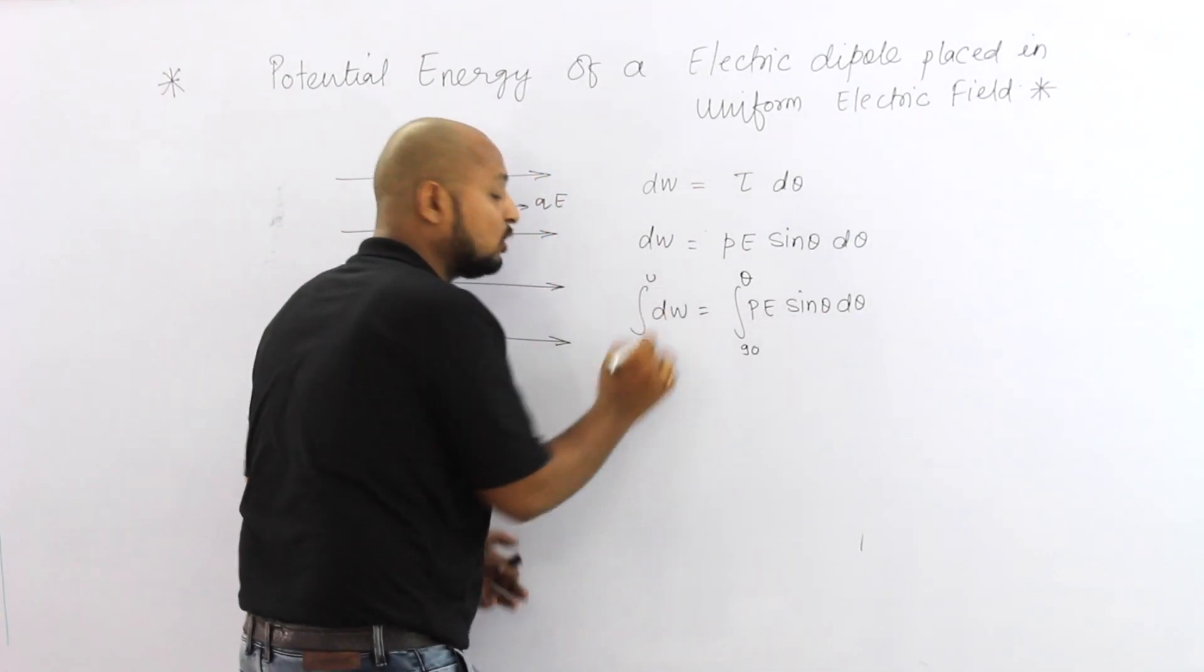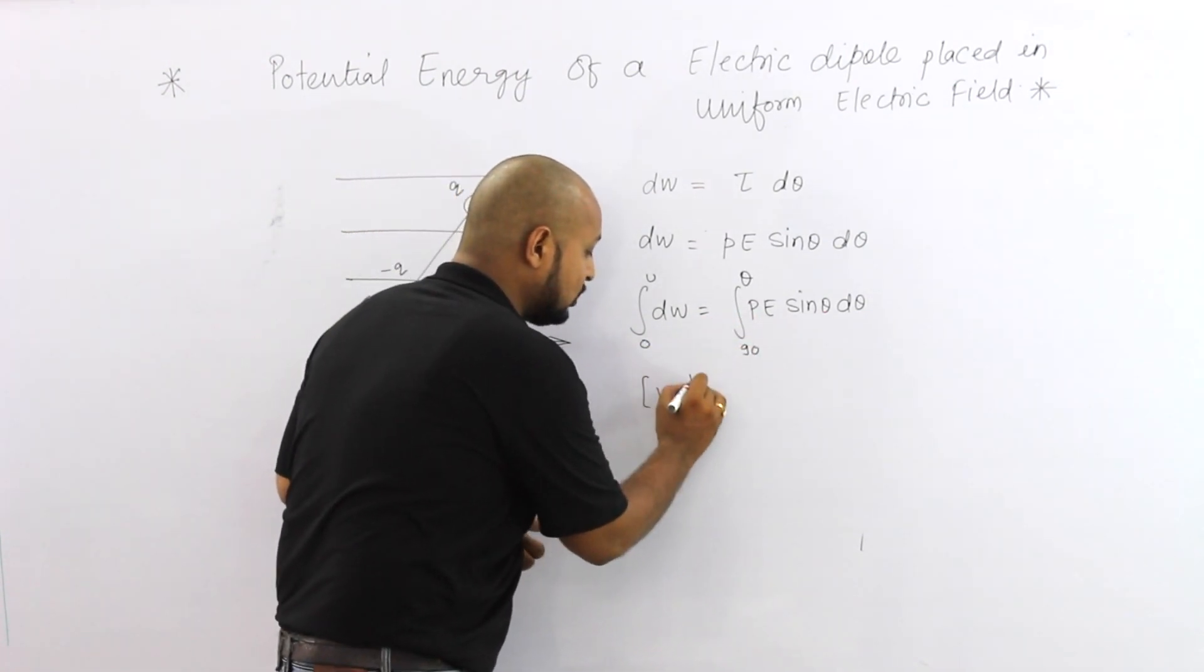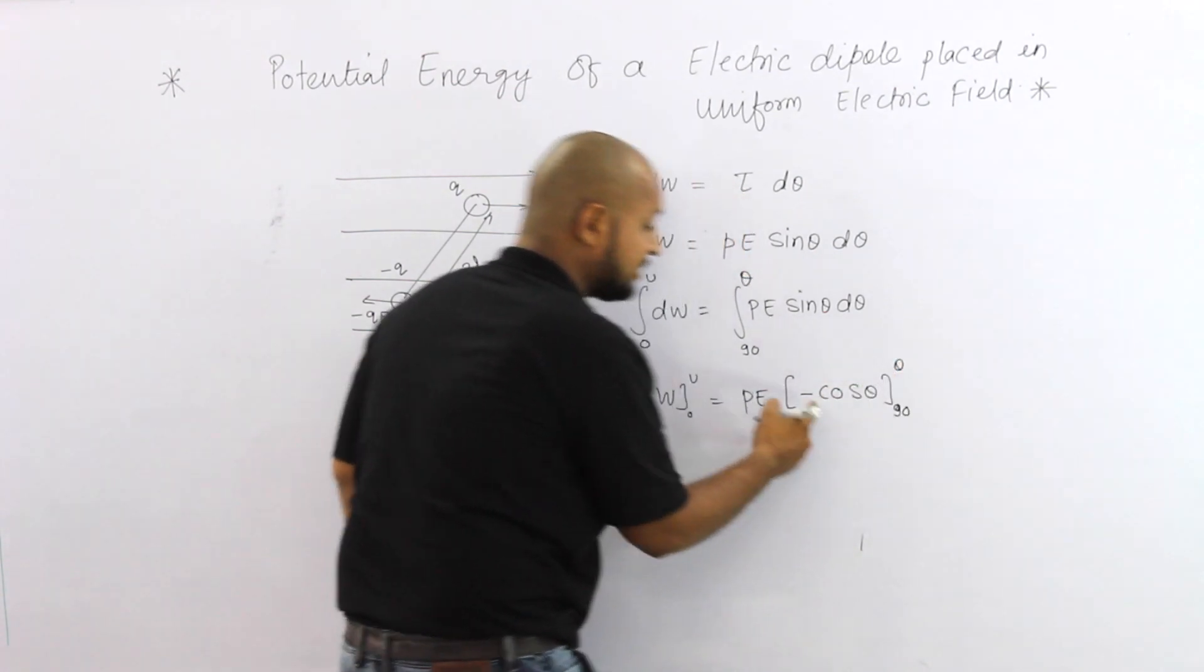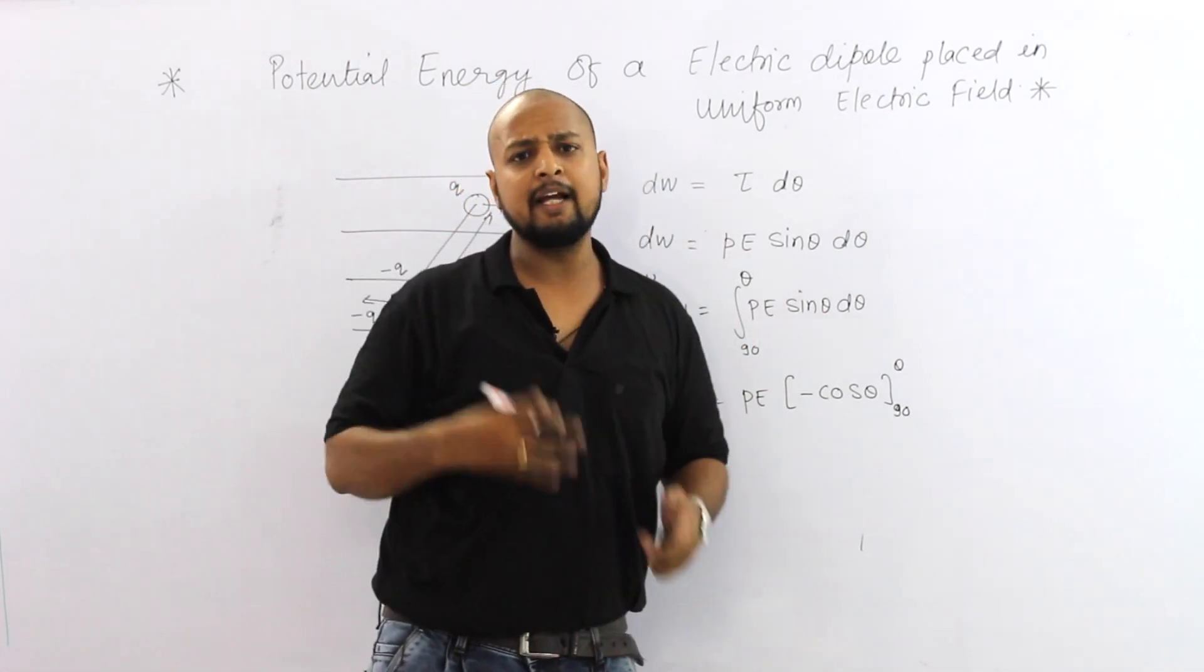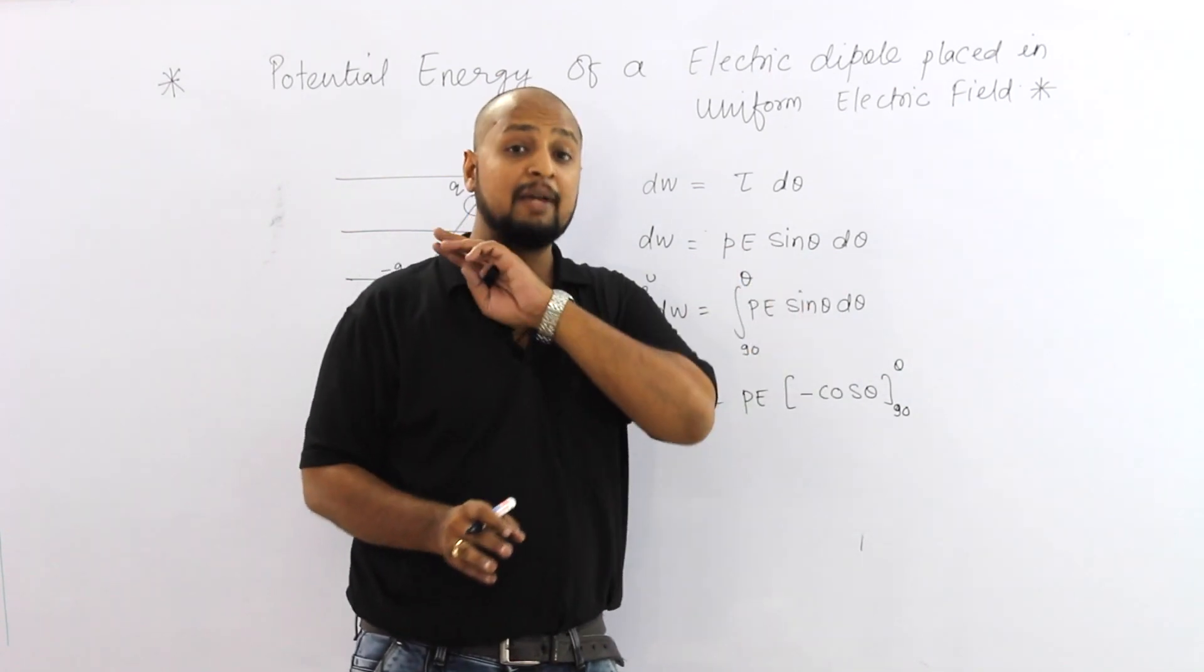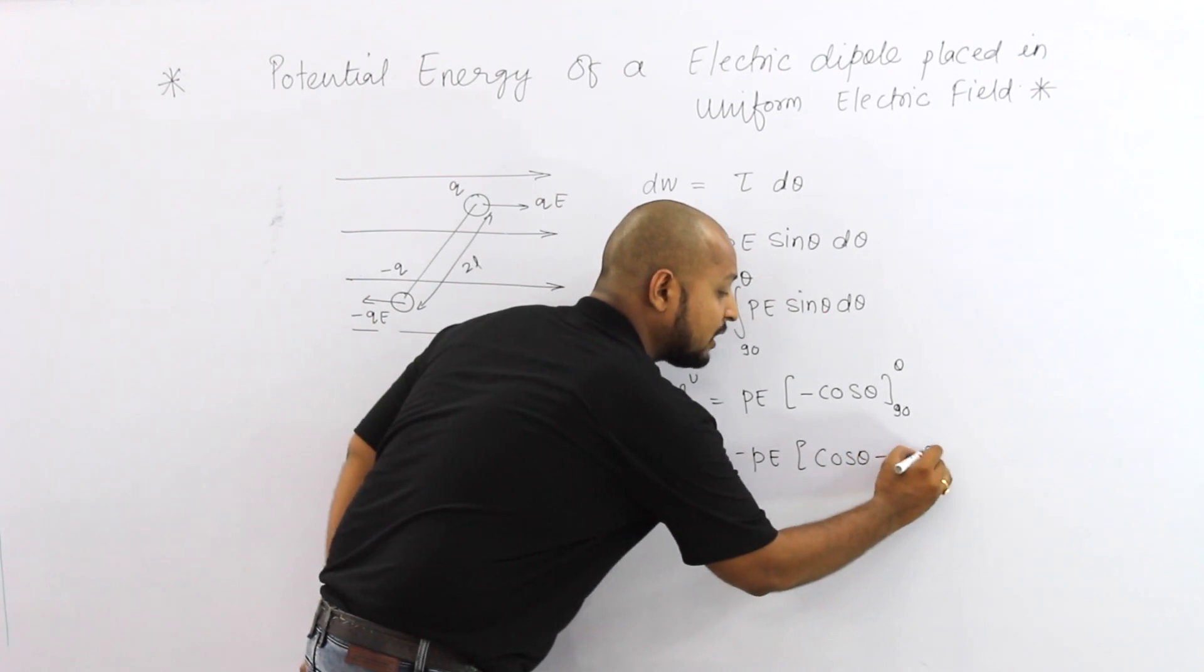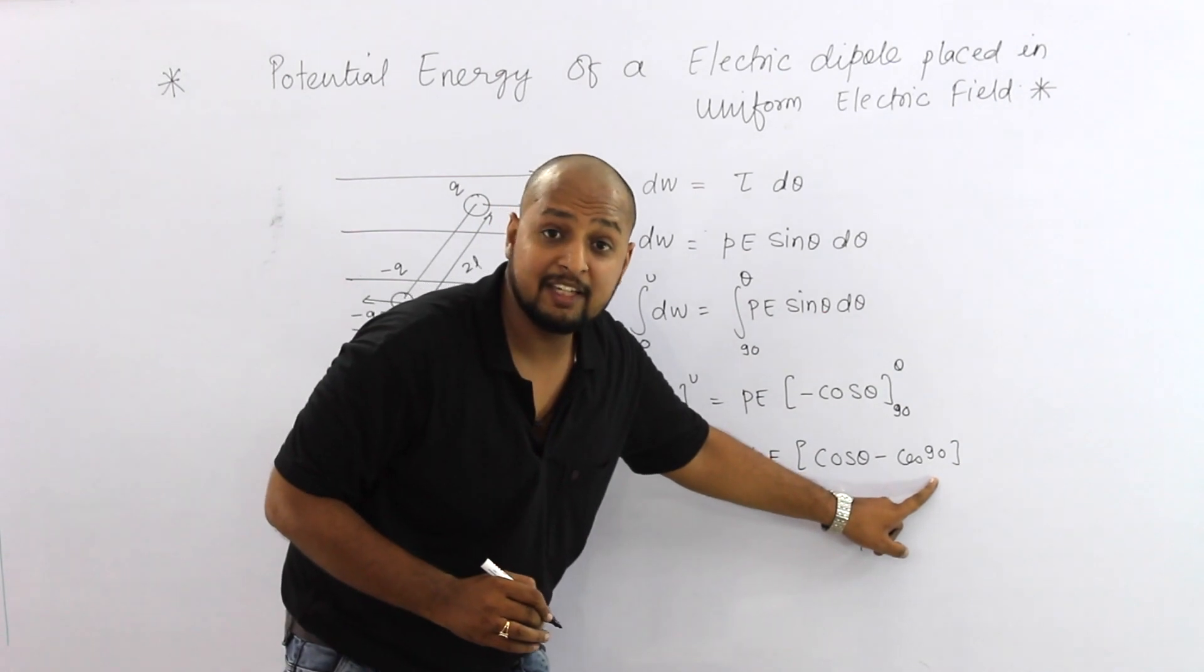Very easy. I integrate W limit to U equals PE sin theta. Integration is minus cos theta. Minus theta minus minus, or minus.